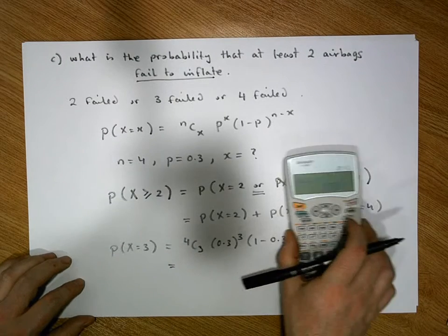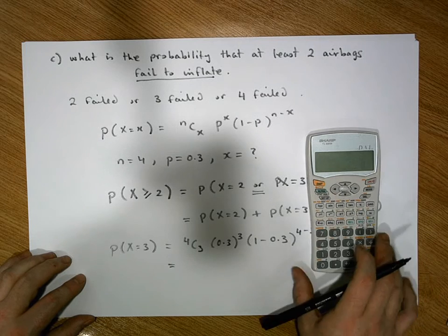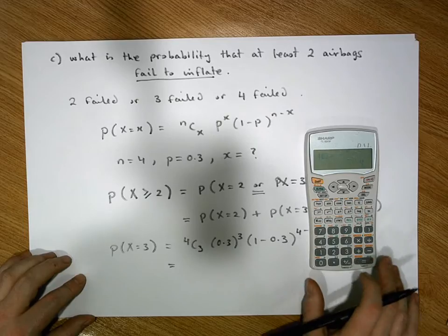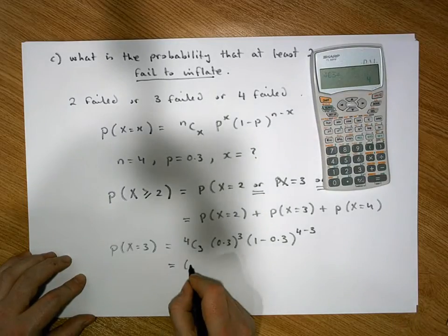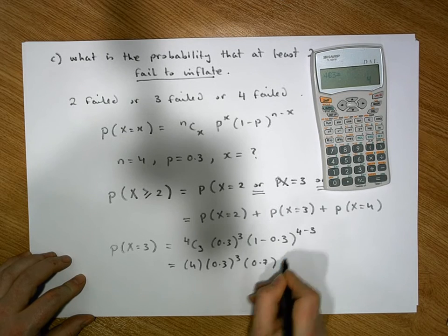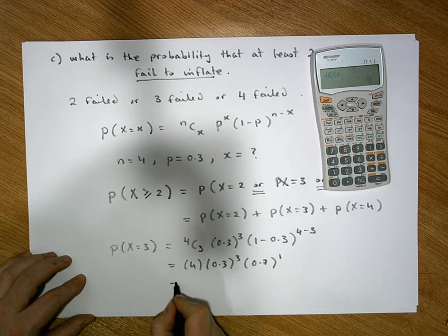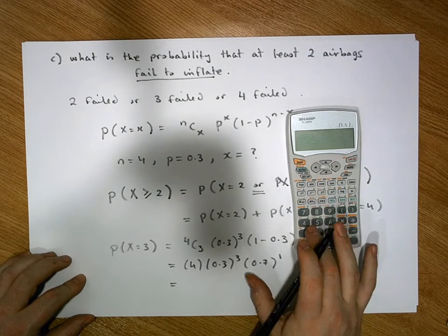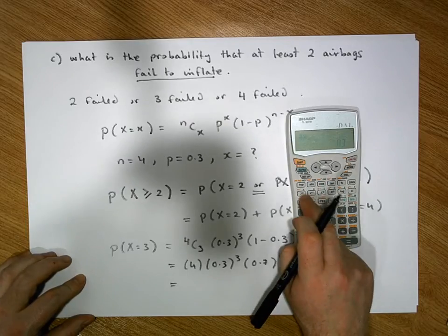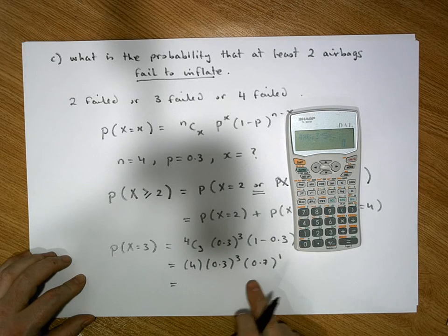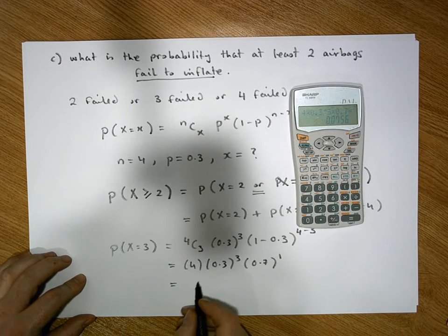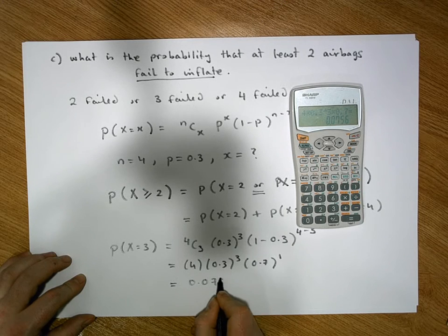When x equals 3, P(X=3) equals 4C3 times 0.3 raised to the power of 3 times 1 minus 0.3 raised to the power of 4 minus 3. Now, 4C3 — how many ways can we select 3 items from 4? On the calculator: 4, second function, NCR, 3 gives us 4. So this is 4 times 0.3 cubed times 0.7 raised to the power of 1, which gives us 0.0756.